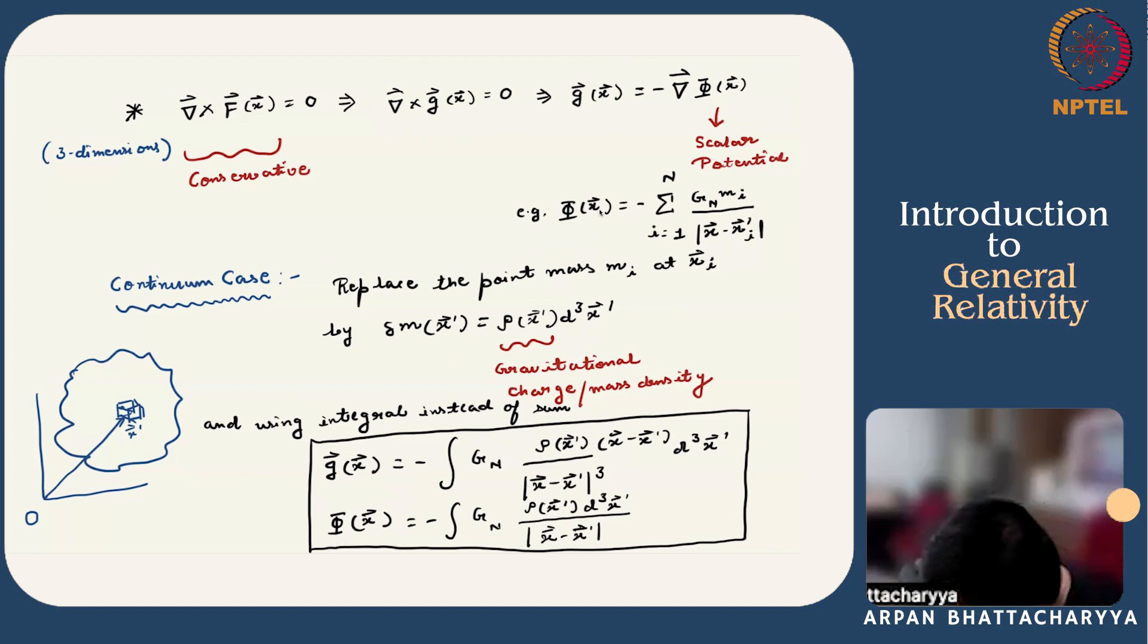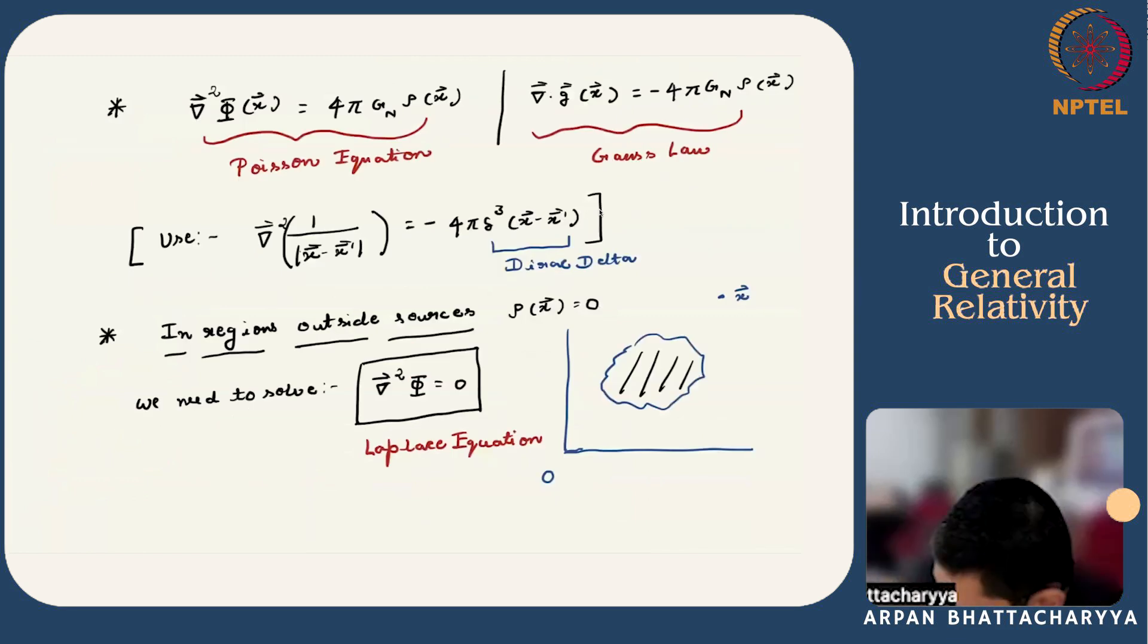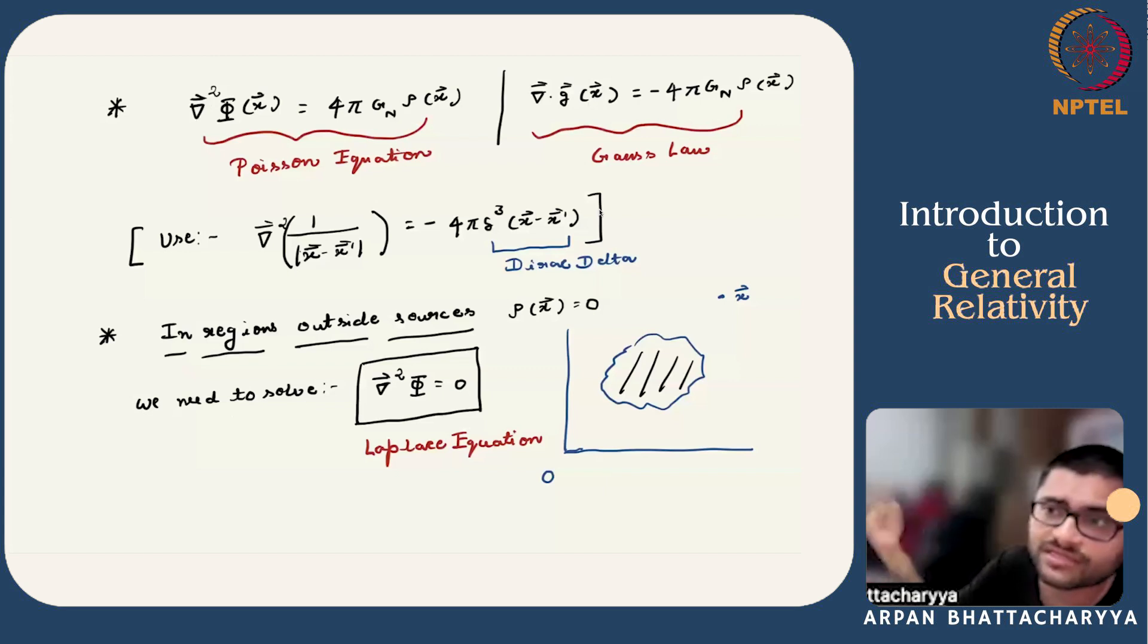Note that the integral is over x', which is the point inside the extended body. It is easy to show that if we use this expression, we get that del dot g is minus 4π G Newton times ρ, the density. This is nothing but the Gauss law which you have seen in electrostatics as well. Also, del square Φ equals 4π G Newton times density, where del square is the three-dimensional Laplacian. While deriving this equation, we used this identity for the Dirac delta function. If you are not familiar, you are encouraged to go back and look at this.